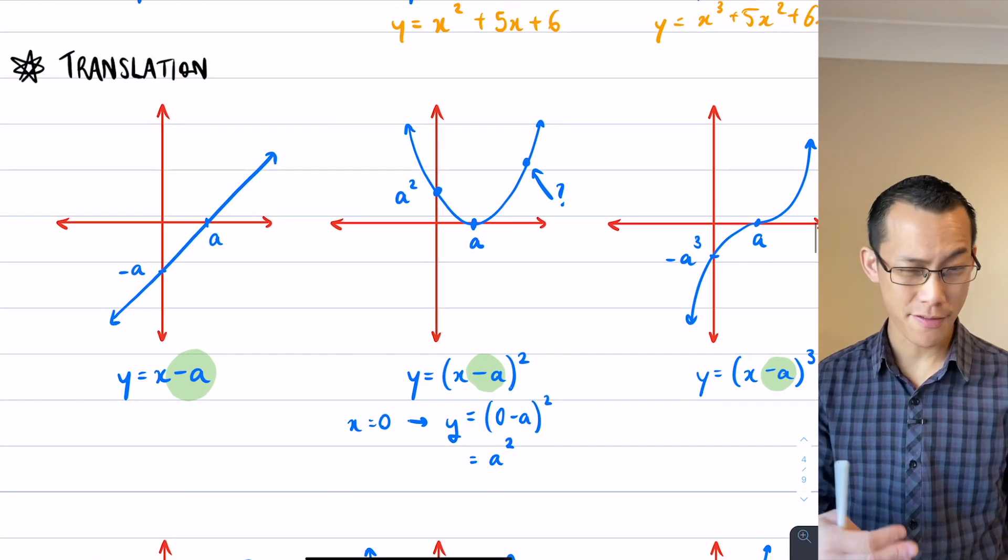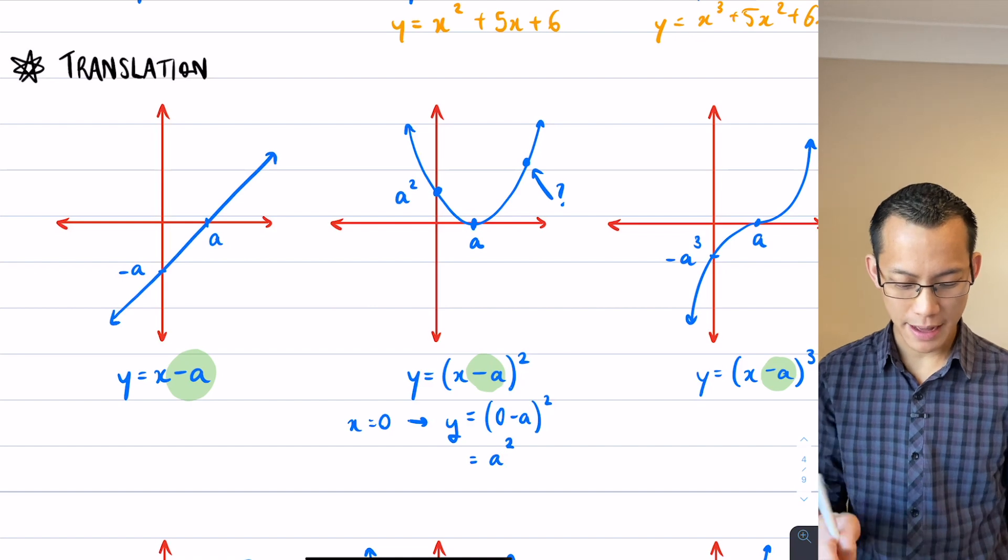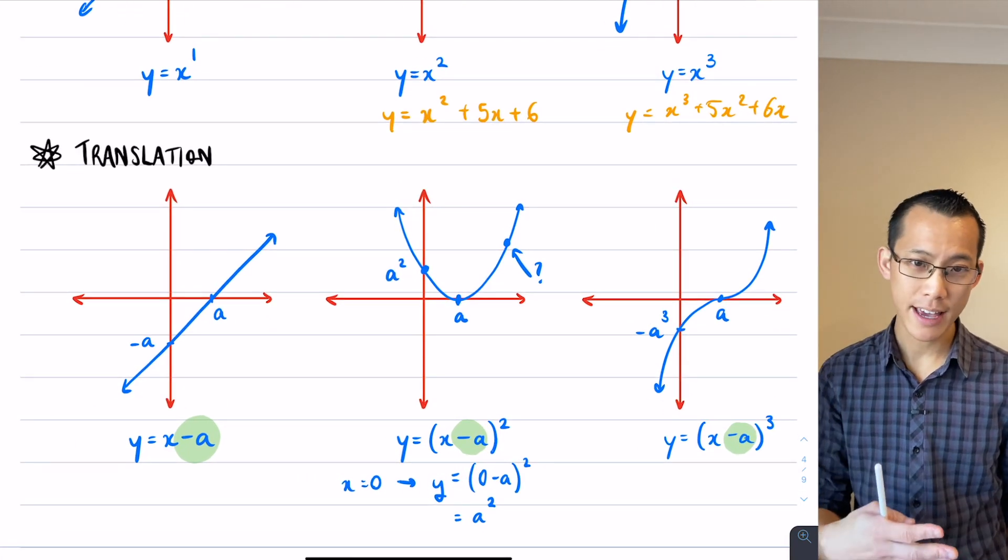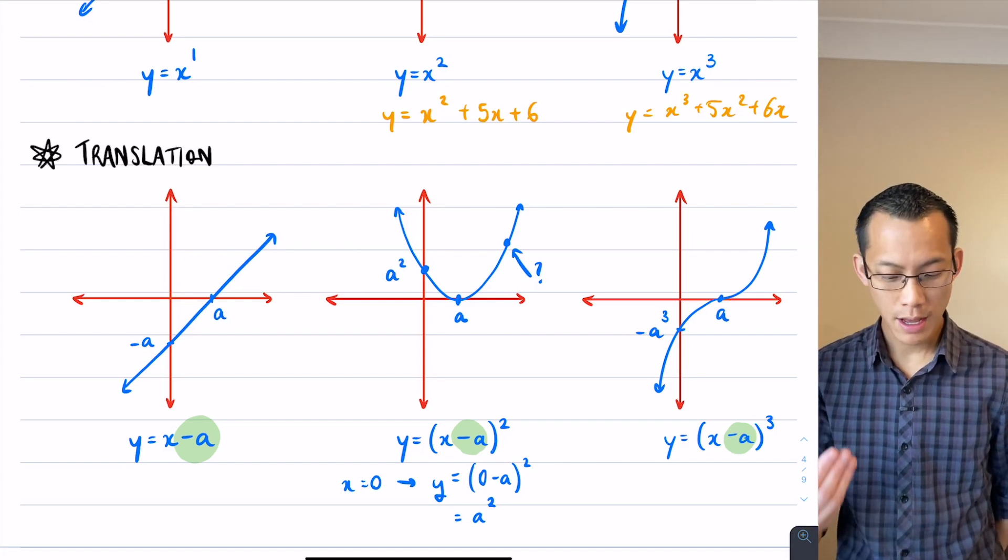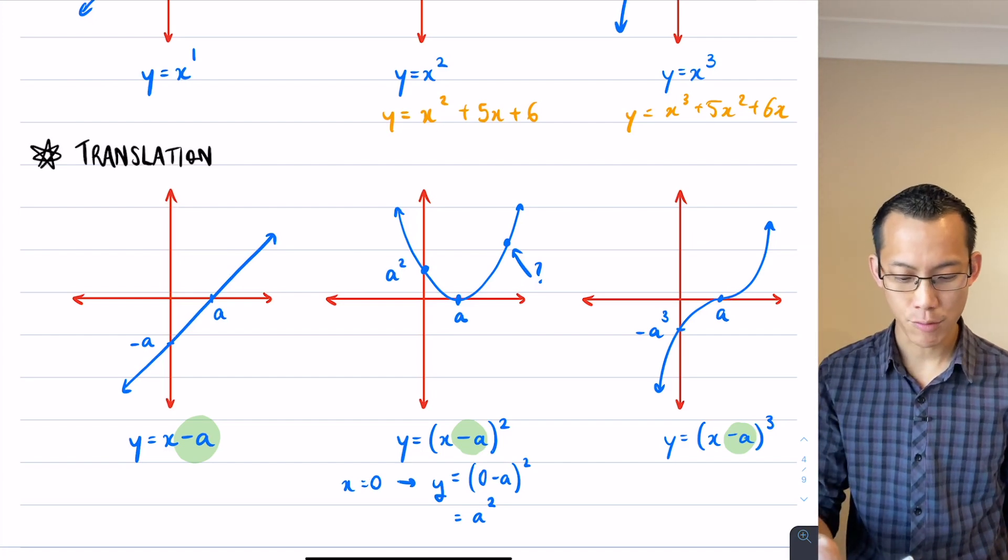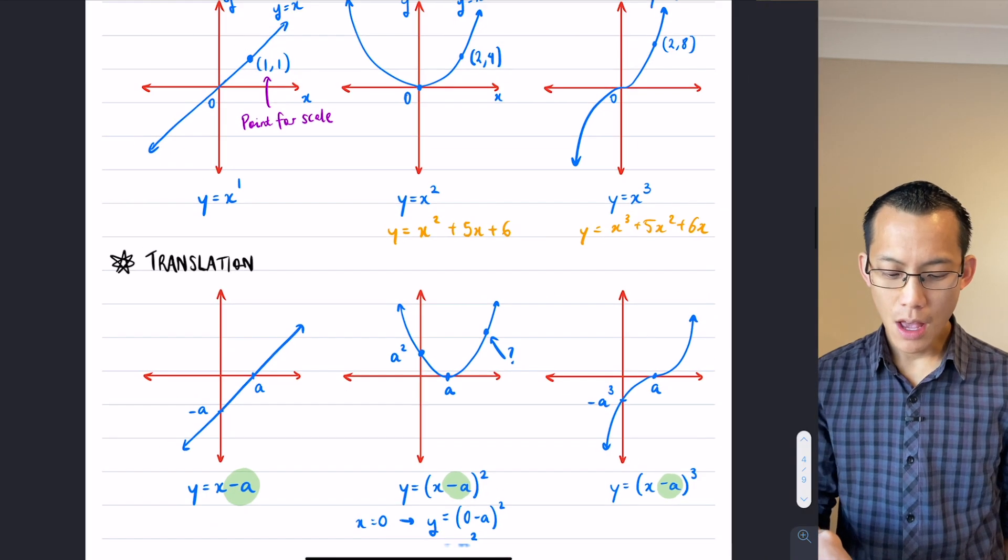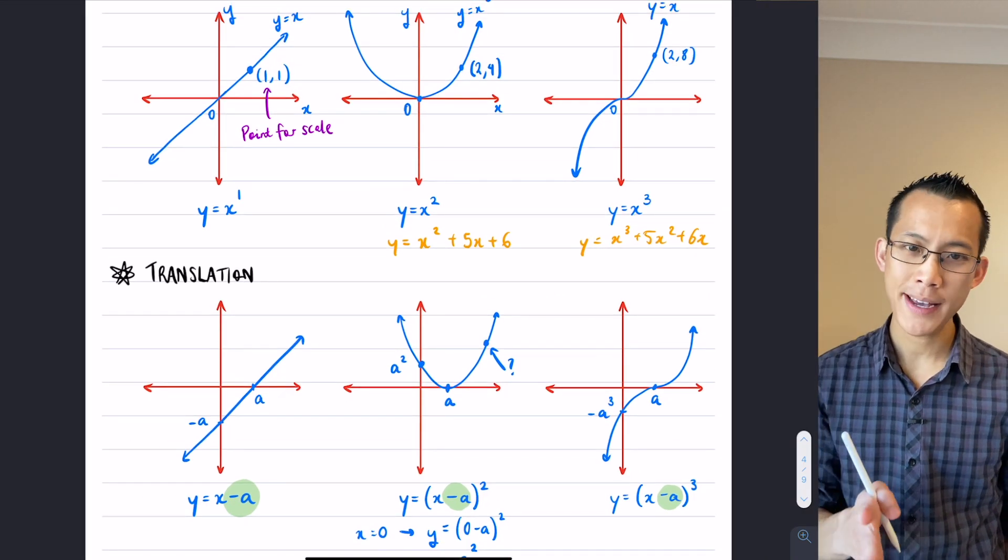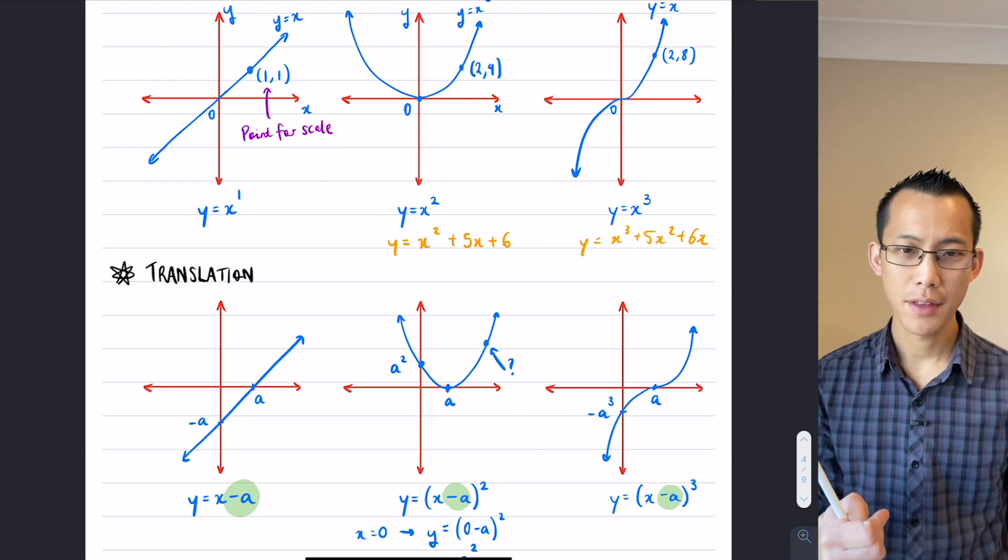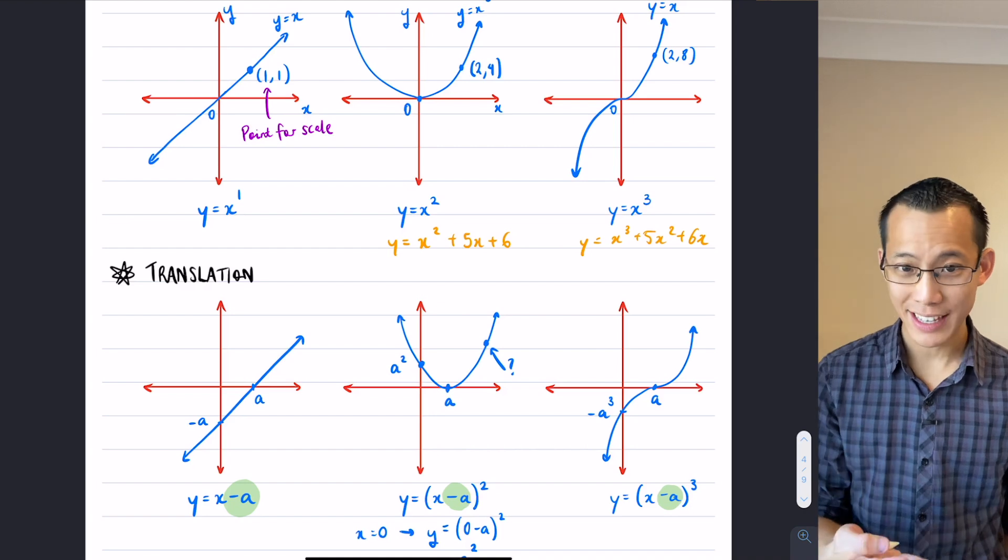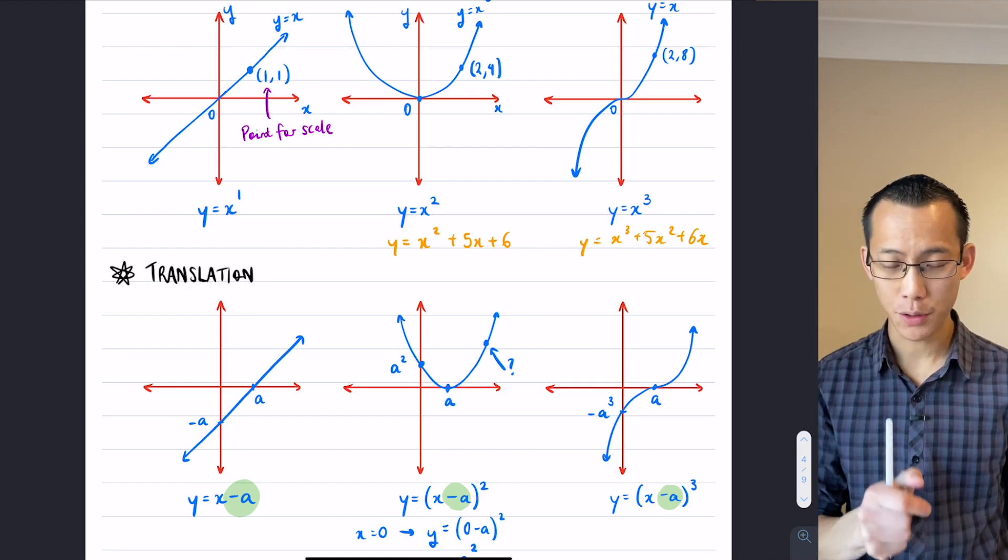So something that you might find helpful is that when I think about this, you might not think about moving the graph. Instead, and again, if this confuses you, leave it behind. But if it's useful to you, like it has been to me, then hopefully it will be something you remember. What I can really think about is a different perspective. When I see that minus a, I can think about this as not the graph, but actually the coordinate axes that are moving. Let me say that one more time.